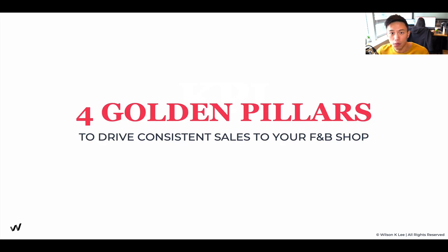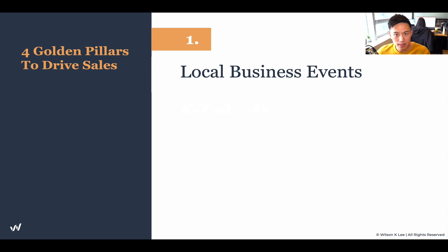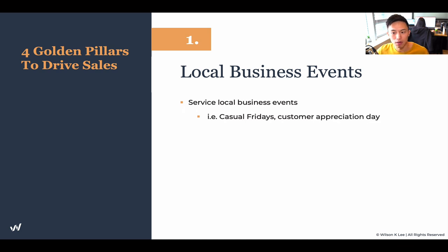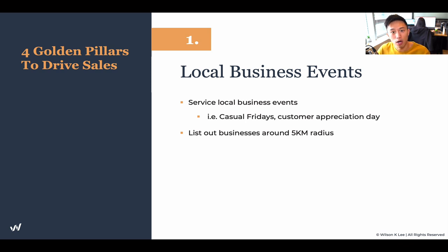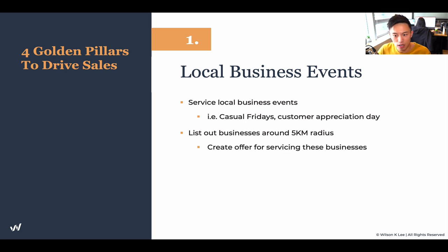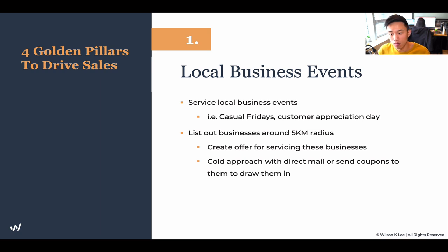Let's go back to the four golden pillars that will help you create predictable and consistent sales. Number one: local business events — servicing local businesses. This is a huge diversified stream of revenue that a lot of people don't take into account. For example, casual Fridays, customer appreciation days. These businesses usually have a budget to pay back their customers or staff, and they will reach out to different restaurants to cater food to thank their team. List out businesses within a five kilometer radius of your restaurant and create an offer for servicing them. Cold-approach them by direct mail, phone calls, or send coupons.